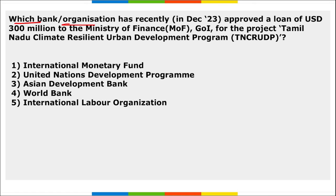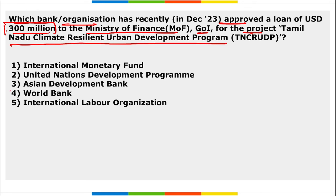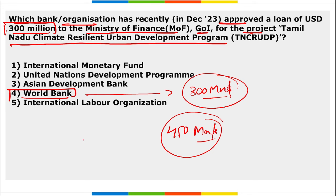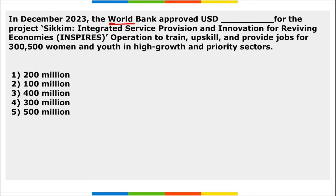Next: which bank or organization recently approved a loan of 300 million dollars to the Ministry of Finance of Government of India for the Tamil Nadu Climate Resilient Urban Development Program? It is the World Bank. The total finance of the program is 450 million dollars; this is the second installment of 300 million dollars given by IBRD, an arm of the World Bank.